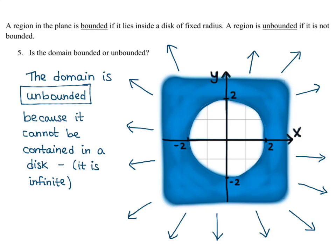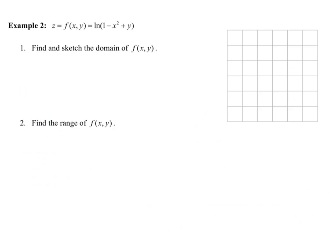Those are the five things to look at when examining the domain of a two-variable function: the domain, the range, whether the domain is bounded or unbounded, whether it's closed or open, and what the boundary is. Those are your five points you'll be asked about for each function. Let's do one more example where you can see these five parts coming together.